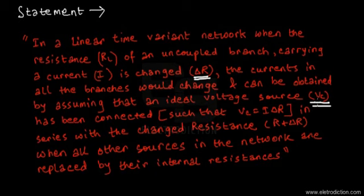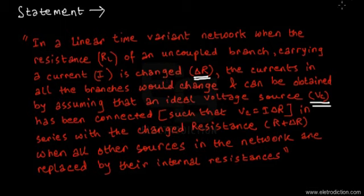This VC is the change in the voltage that's basically occurring in that branch through which we are trying to obtain the current. There is a branch, and I'll just show you a network that would make it easier for you to understand.